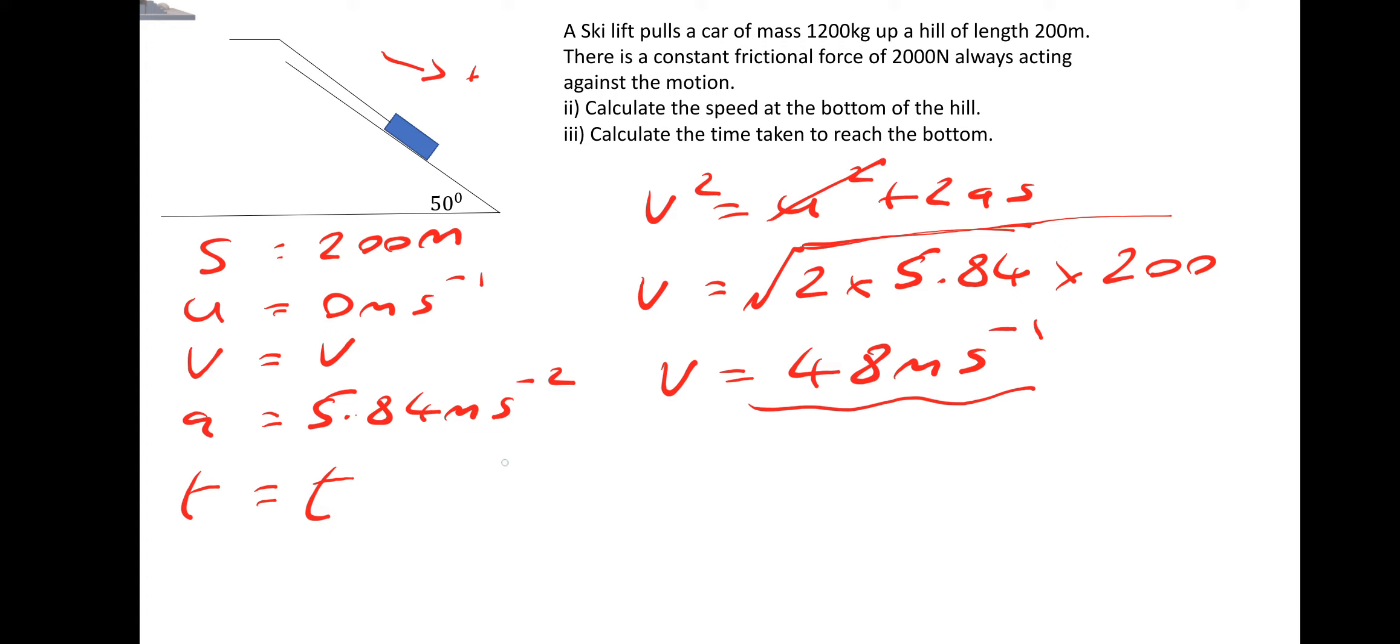Then we can do time using S equals UT plus half A T squared. Obviously the initial speed is zero, so it's just S equals half A T squared. And rearrange to find T. So T is equal to the square root of 2S over A. That's 400 divided by the acceleration, 5.84. Square root gives us a time of 8.3 seconds.